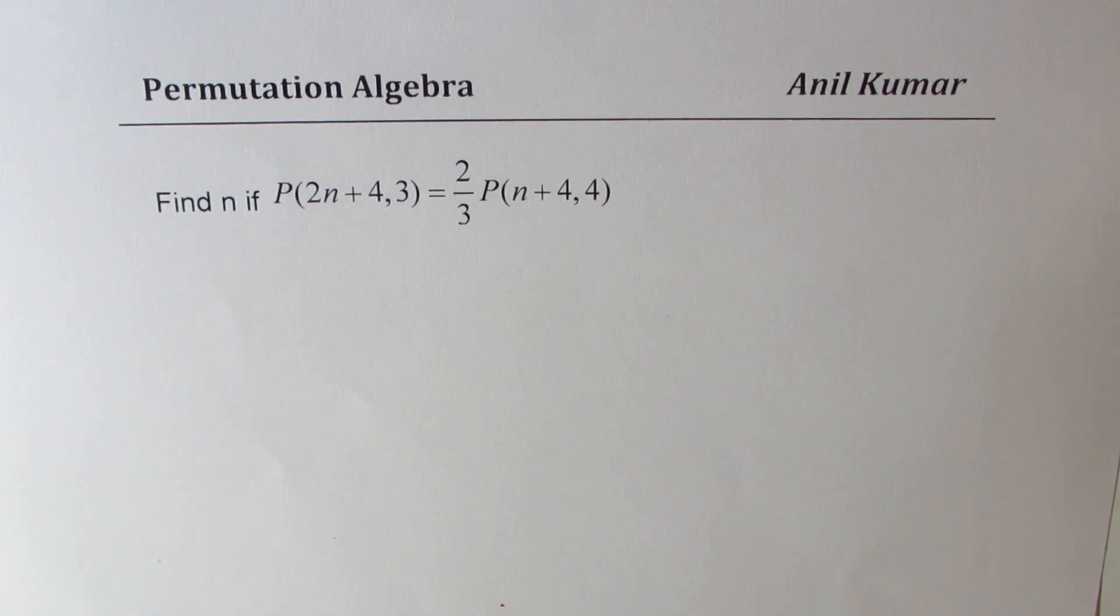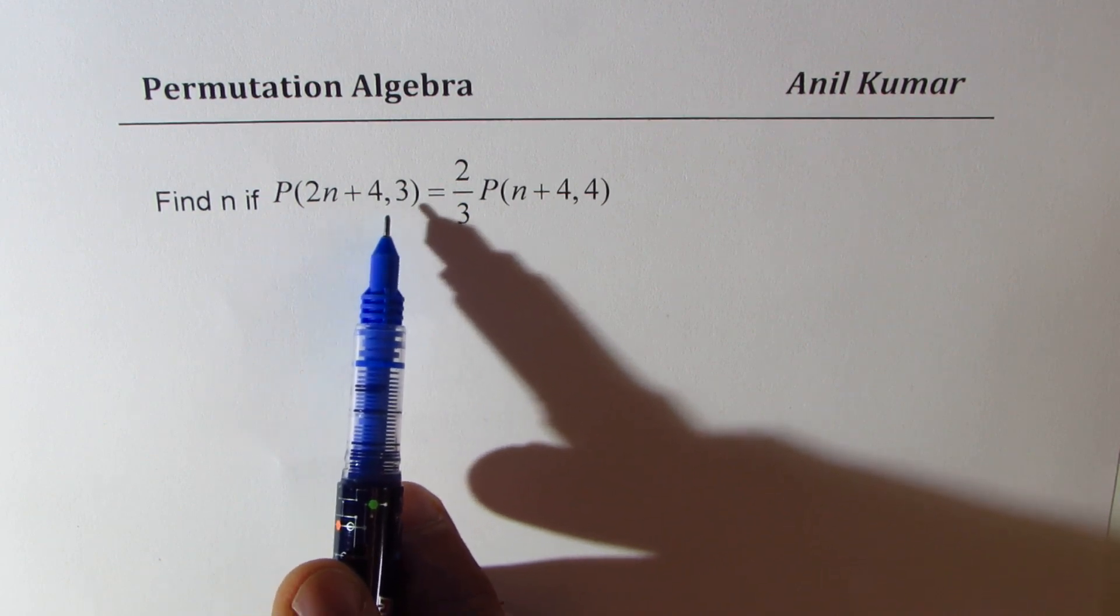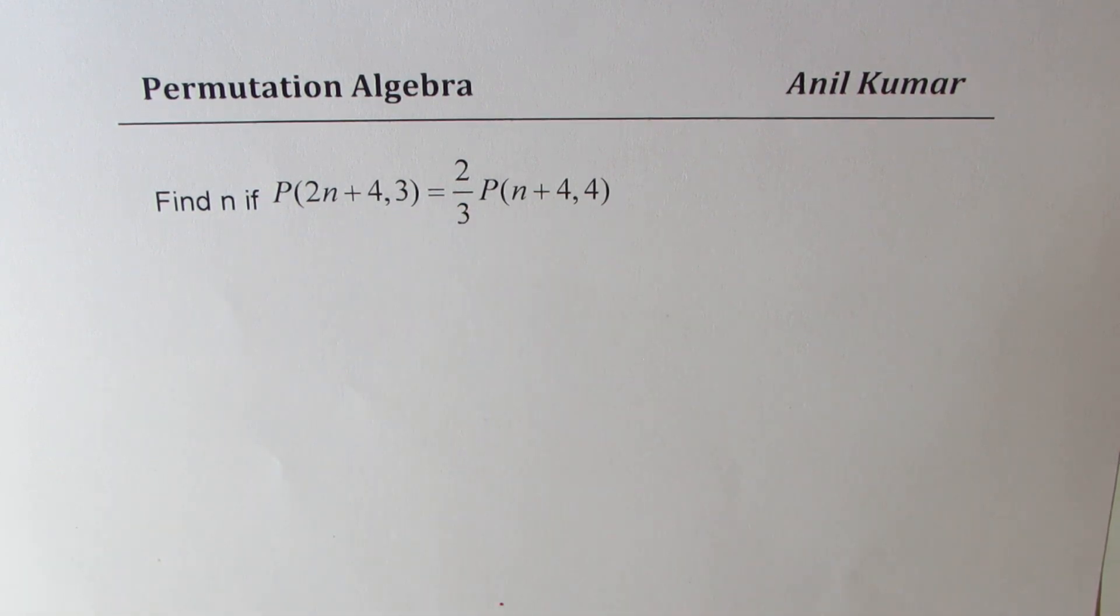I'm Anil Kumar sharing with you a test question on algebra of permutation. All the best to all my IB students who are taking a test tomorrow. The question here is find n if P(2n+4, 3) equals 2/3 times P(n+4, 4).